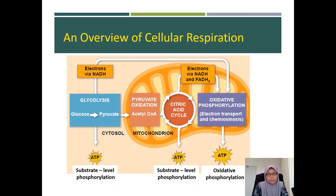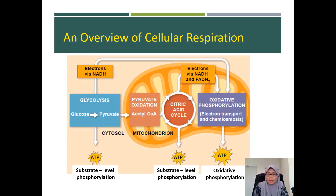Let's take a look at the overview of cellular respiration. The main objective of respiration is to harvest the energy from glucose and make ATP. But from the previous components of respiration — glycolysis, pyruvate oxidation, and the citric acid cycle — neither of these generate much ATP. It produces only four ATP, and all by substrate-level phosphorylation. There are two ATP produced from glycolysis.